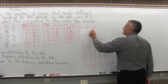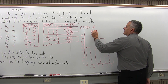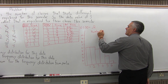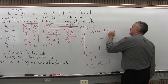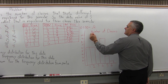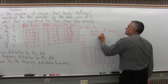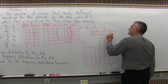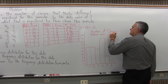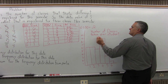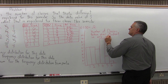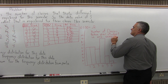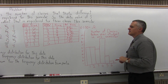So I've labeled the bottoms of the bars. It's nice to label your histogram too, so we can label it something like 'number of classes taken per student in one semester.'